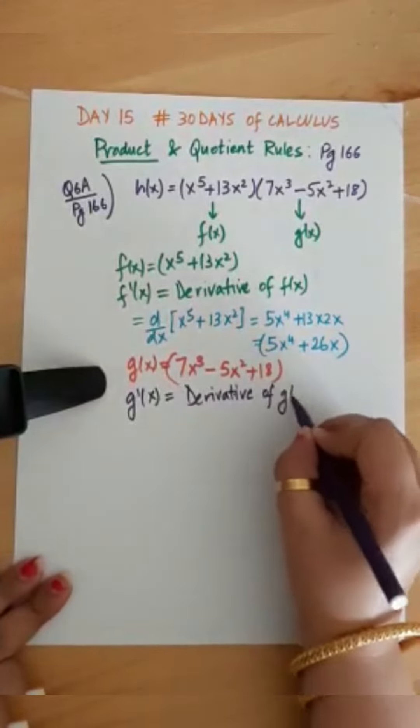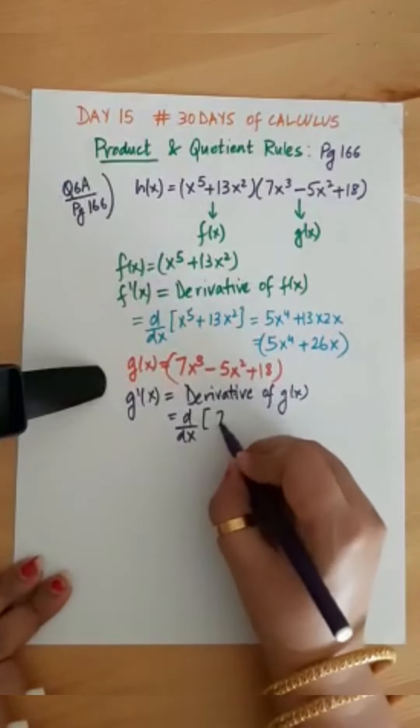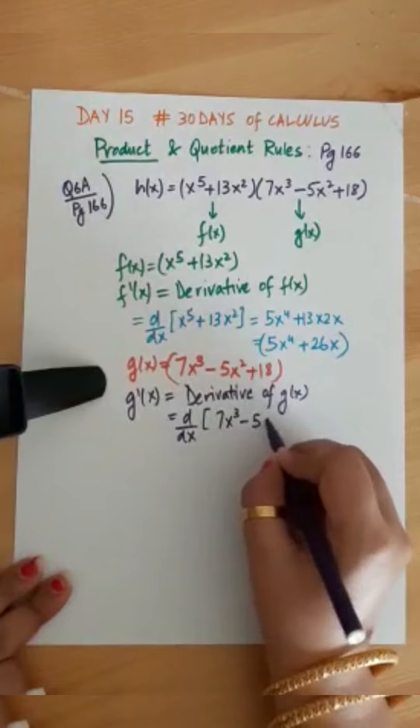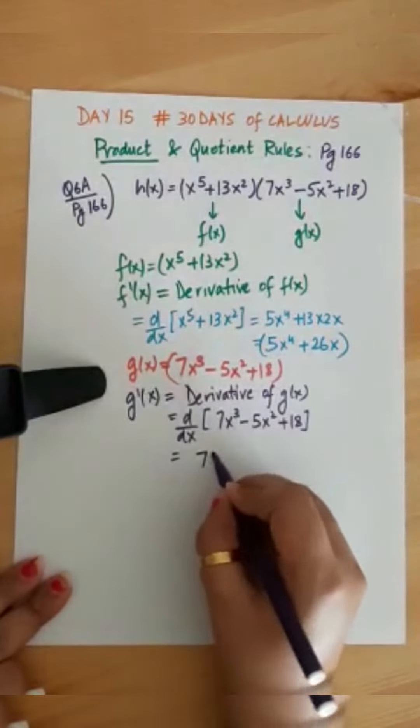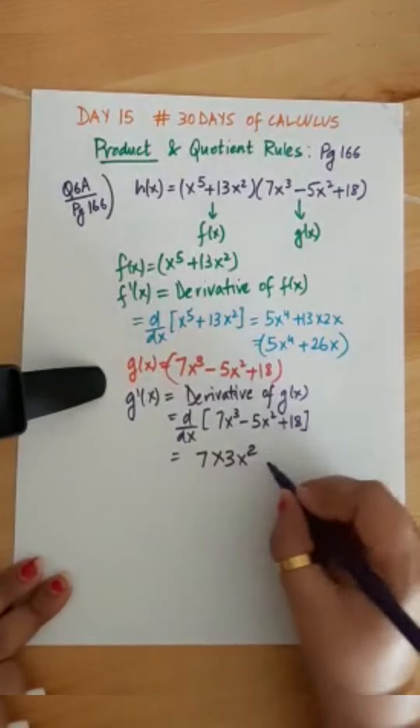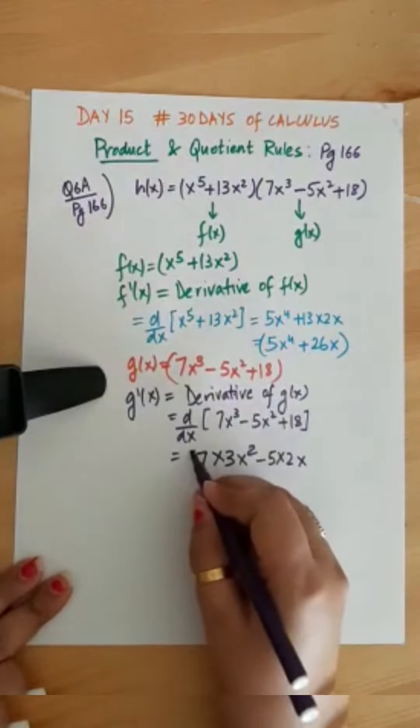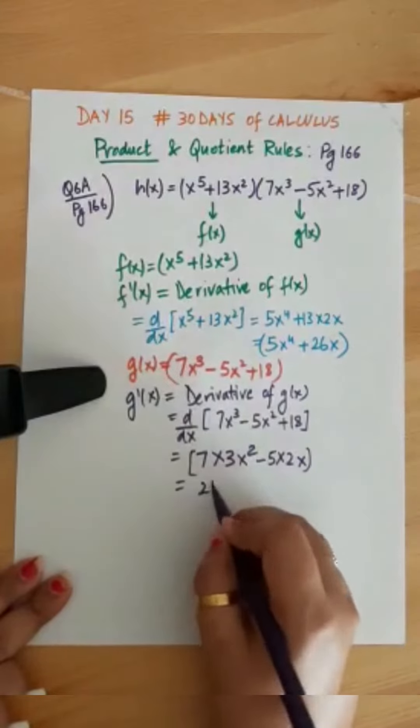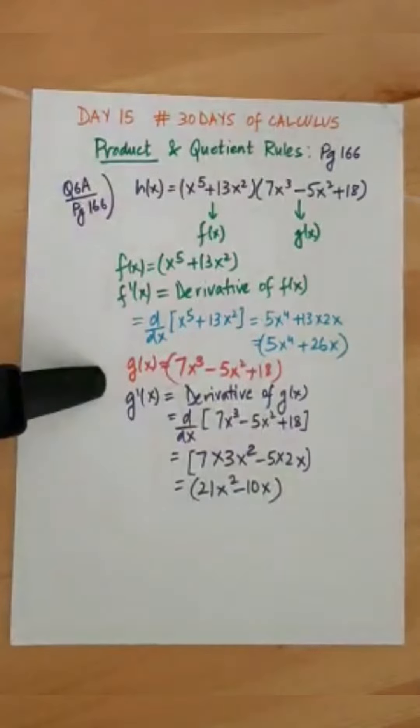So d by dx of the function g(x) which is 7x cube minus 5x square plus 18. Again we are going to use power rule and write it as 7 times 3x square minus 5 times 2x, and the constant 18 its derivative is 0. So this gives you 21x square minus 10x as the value of g prime.